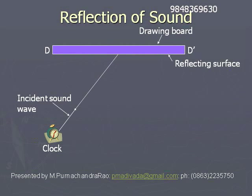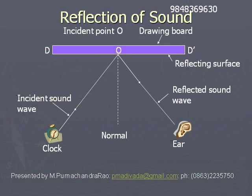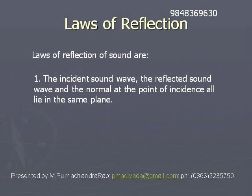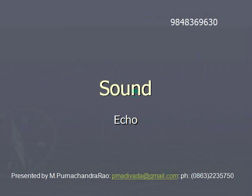If we consider the incident sound beam, the reflected sound wave, and the normal at the point of incidence, then all three will lie in the same plane. The angle of incidence — that is, the angle between the incident wave and the normal — is equal to the angle between the reflected wave and the normal. So angle of incidence I is equal to angle of reflection R, and the incident wave, reflected wave, and normal all lie in the same plane.